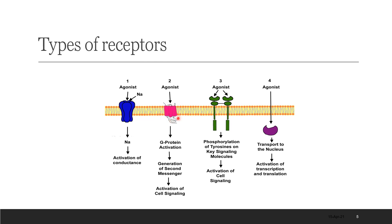The second type of transmembrane receptor is the G-protein coupled receptor. It is a serpentine receptor that spans the lipid bilayer in seven transmembrane helices. It requires G-protein activation and a second messenger system, followed by cell signaling, before the action of the drug is seen.